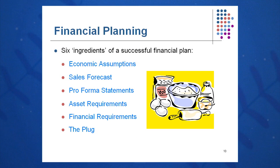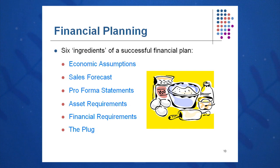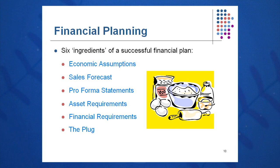In a financial plan there are six key ingredients. The first are economic assumptions. Typically in a large corporation these come from the treasury group near the CFO's office. This may include the interest rate, and in the case of a chemical company, the price of oil and gas. General economic assumptions include GDP growth and how fast we think the economy will grow — and from that we make our other predictions.